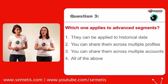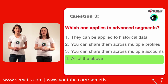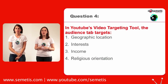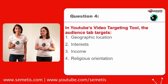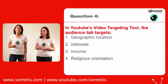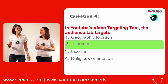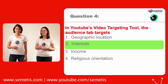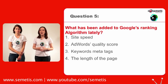Question four: in YouTube's video targeting tool, what does the audience tab target? Geographic location, interests, income, or religious orientation? The answer is interests.